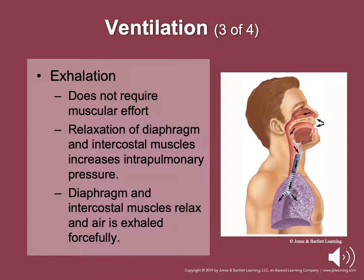Exhalation does not require muscular effort — it is a passive process. The Hering-Breuer reflex is a feedback loop that prevents over-expansion of the lungs by terminating inspiration. Relaxation of the diaphragm and intercostal muscles increases intrathoracic pressure. When the size of the thoracic cage decreases, air in the lungs is compressed into a smaller space, increasing air pressure. Maximum expiration occurs when the diaphragm and intercostal muscles relax and air is exhaled.